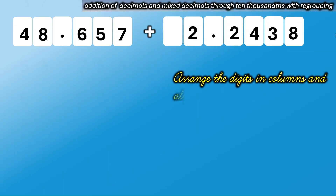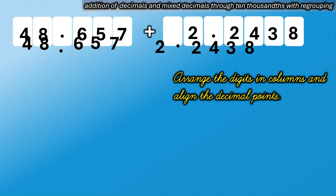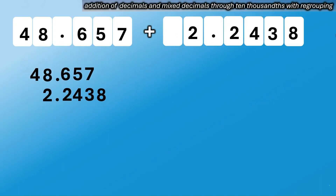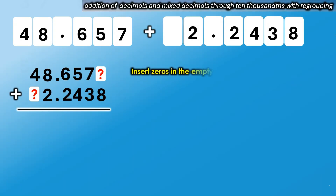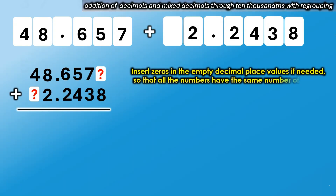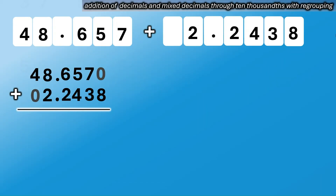First, arrange the digits in columns and align the decimal points. Second step: insert zeros in the empty decimal place values if needed, so that all the numbers have the same number of decimal places. Then we add all digits like whole numbers.